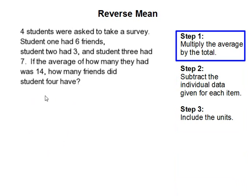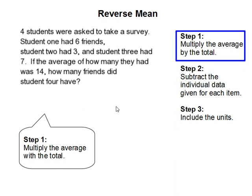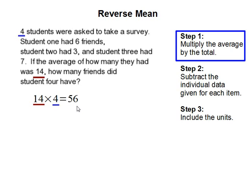So to find out that number, the first thing we're going to do is get the total number of friends they have given the average. So they have 14 as the average, and there are four students. So 14 times 4 gets us 56. And that is the total amount of friends that all four students have.